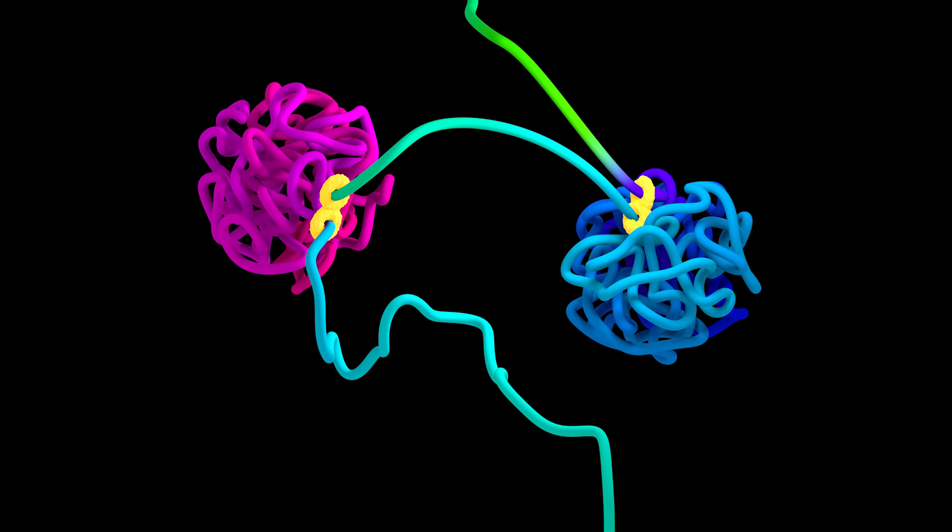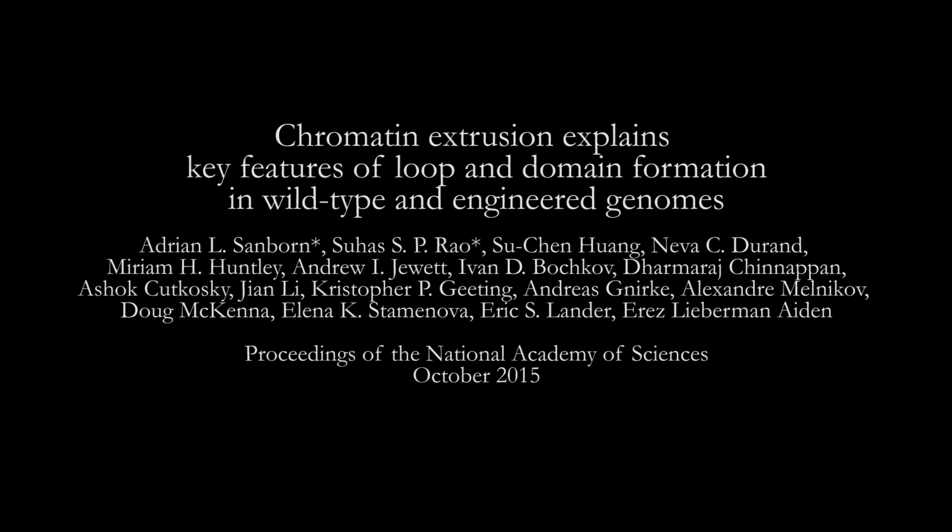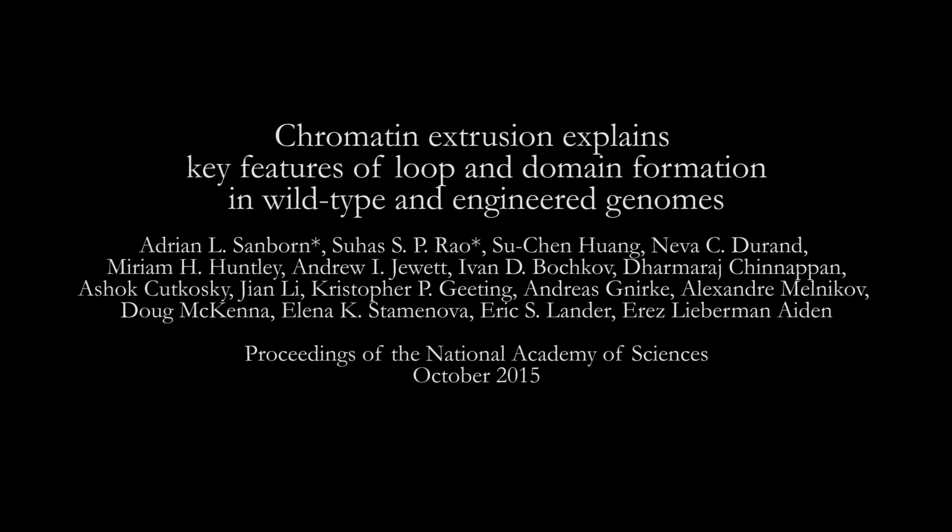At scales much larger than the double helix, the structure of the human genome is poorly understood. Loop extrusion provides us with a richer understanding of the genome's three-dimensional architecture.